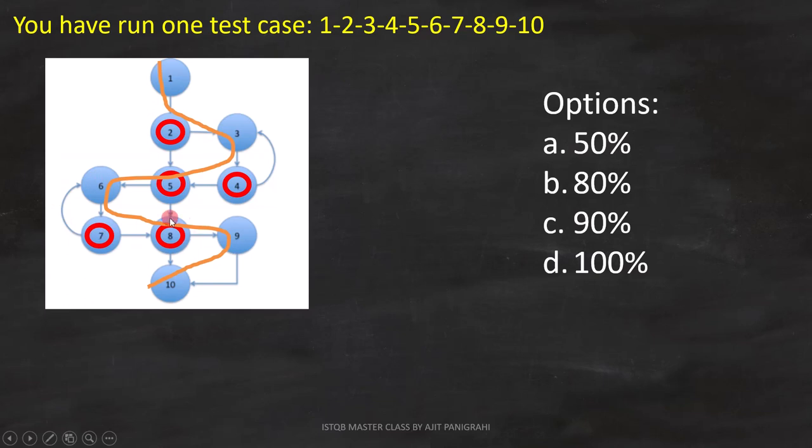The fifth decision bubble is 8. Here, the path from 8 to 9 is covered, but the path from 8 to 10 is not covered.